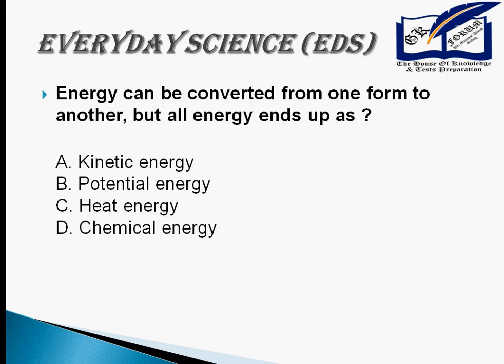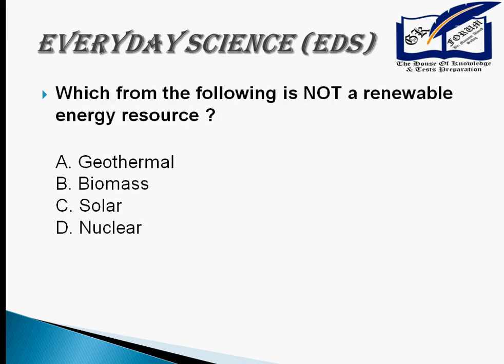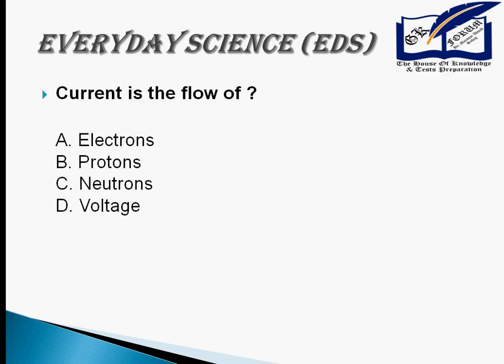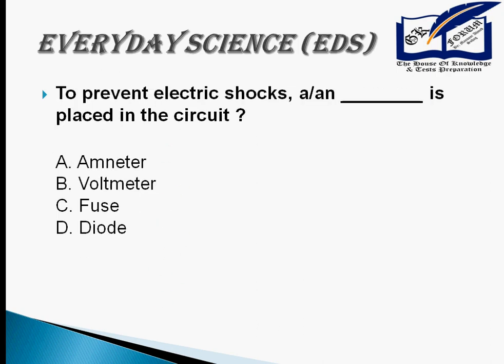Energy can be converted from one form to another, but all energy eventually ends as heat energy. Nuclear energy is not a renewable source of energy. Electric current is the flow of electrons. To prevent electric shocks, a fuse is placed in the circuit.